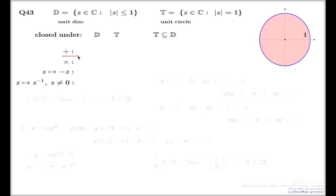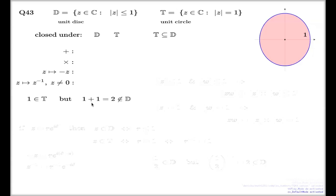Addition. What are your wild guesses for addition? Is D or is T closed under taking the sum of two complex numbers? No — that's right, no. In order to convince everyone that the answer is no, I have to present an example. If I take the number one, which belongs to T and by implication belongs to D as well, but if you add one and one, it will be two, which is not even in D, let alone T. So the answer is no for both.